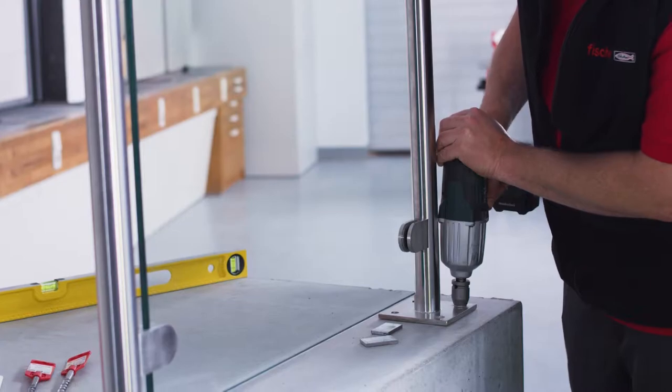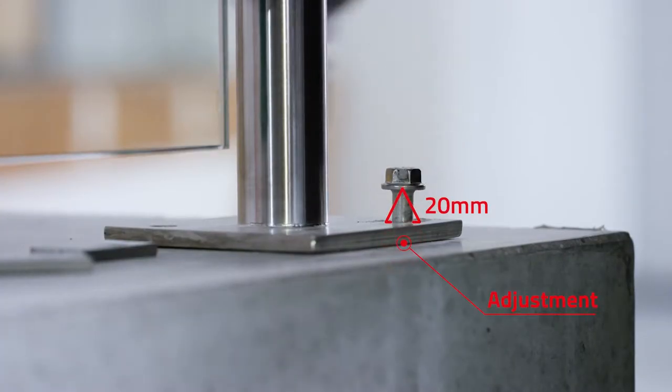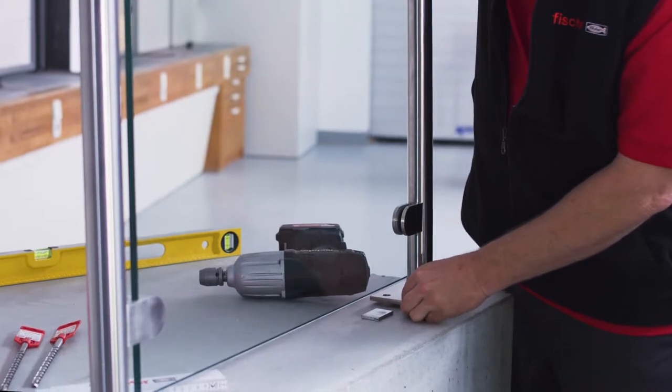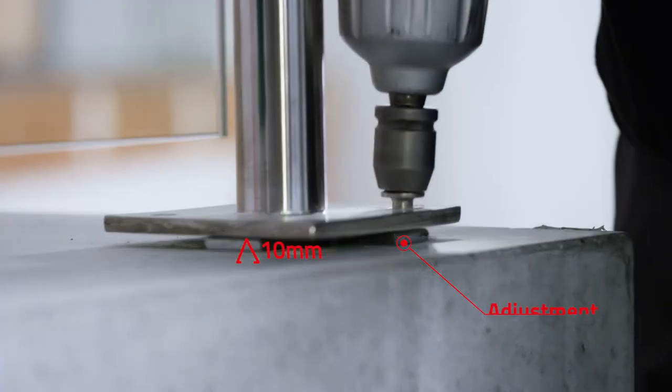The Ultracut FBS2 can be unscrewed twice for a total length of 20 mm and place maximum 10 mm packing below the baseplate, enabling the fixture to be adjusted exactly.